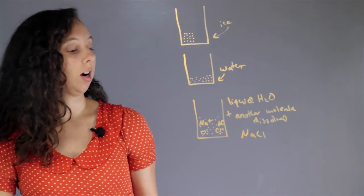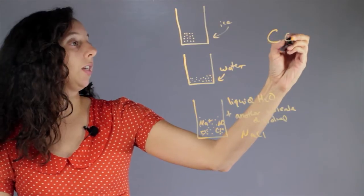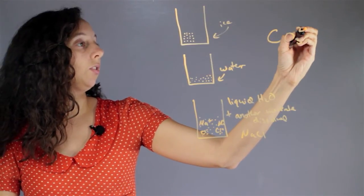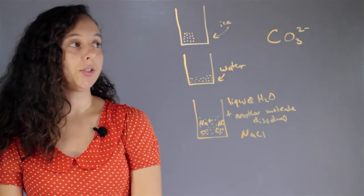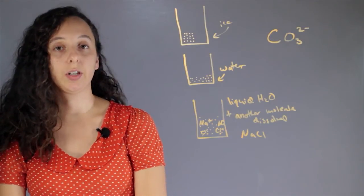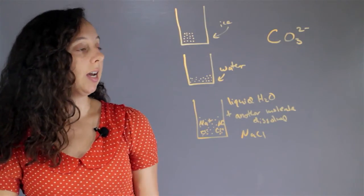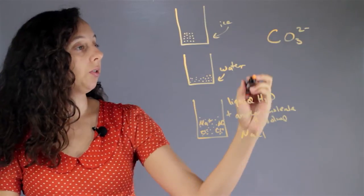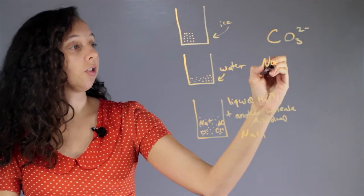So the general form for a carbonate is CO3 two minus. And so this is an ion, which means it's going to have a counter ion. So let's go ahead and say that this guy is paired with two sodiums, because each sodium has a charge of plus one.